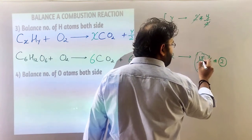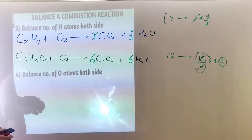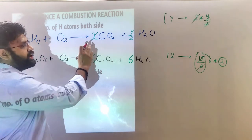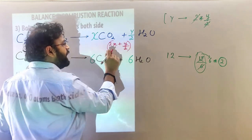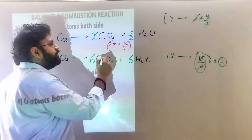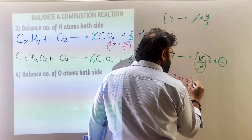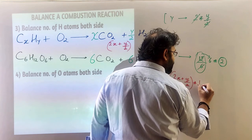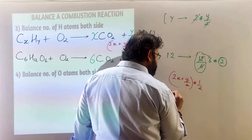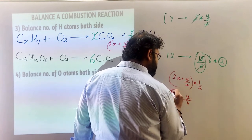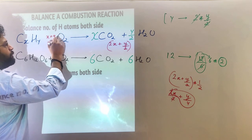The last step is to balance oxygen. On the right-hand side we have 2x oxygen from CO2 and y/2 from H2O, giving a total of 2x + y/2 oxygen atoms. Since O2 already provides 2 oxygen atoms, we multiply by (1/2), giving x + y/4 as the coefficient for O2. So oxygen coefficient is x + y/4.